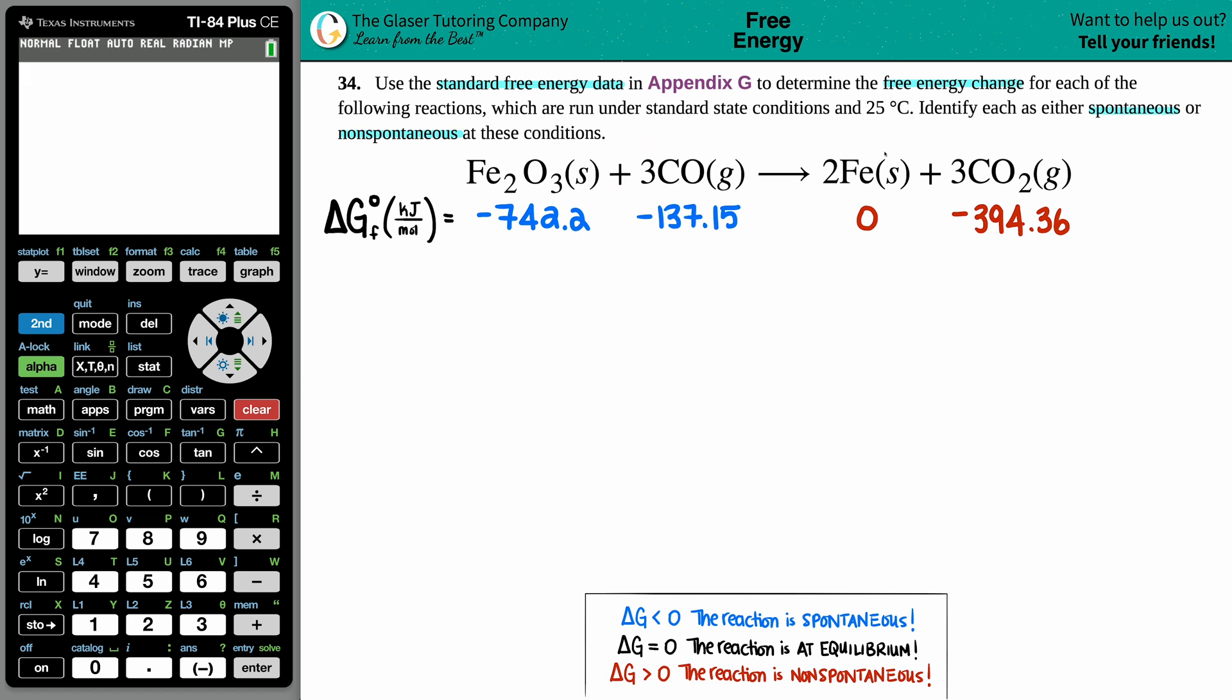First things first, we want to find that free energy change. Any change in chemistry is a delta, so it's that little triangle, final minus initial. Free energy, more specifically Gibbs free energy, so we're talking about delta G.